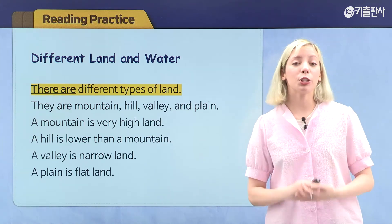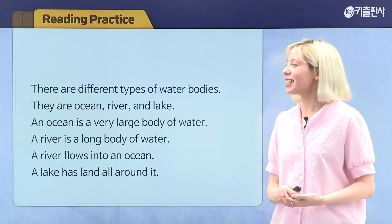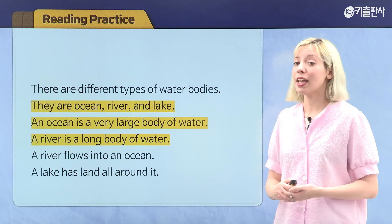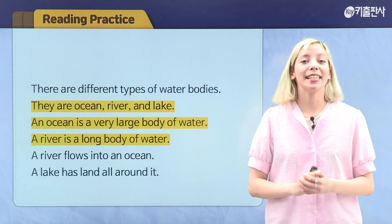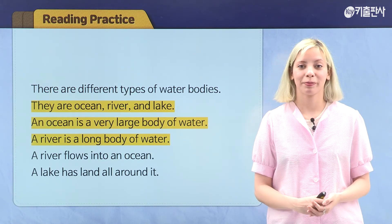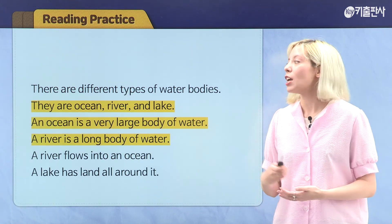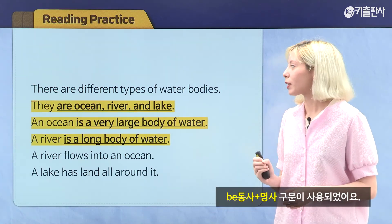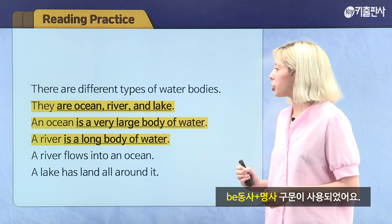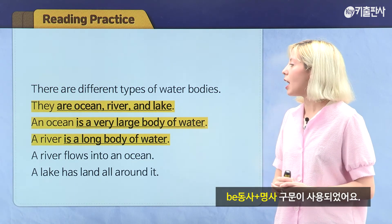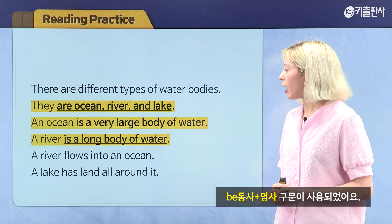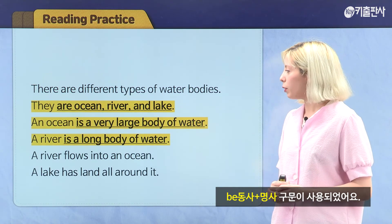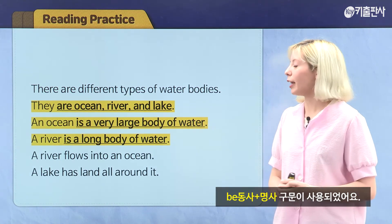Let's move on to our next page. Let's take a look at these three sentences. Can you find the sentence pattern here? That's right. They use the be verb followed by a noun. They are ocean, river, and lake. An ocean is a very large body of water. A river is a long body of water.